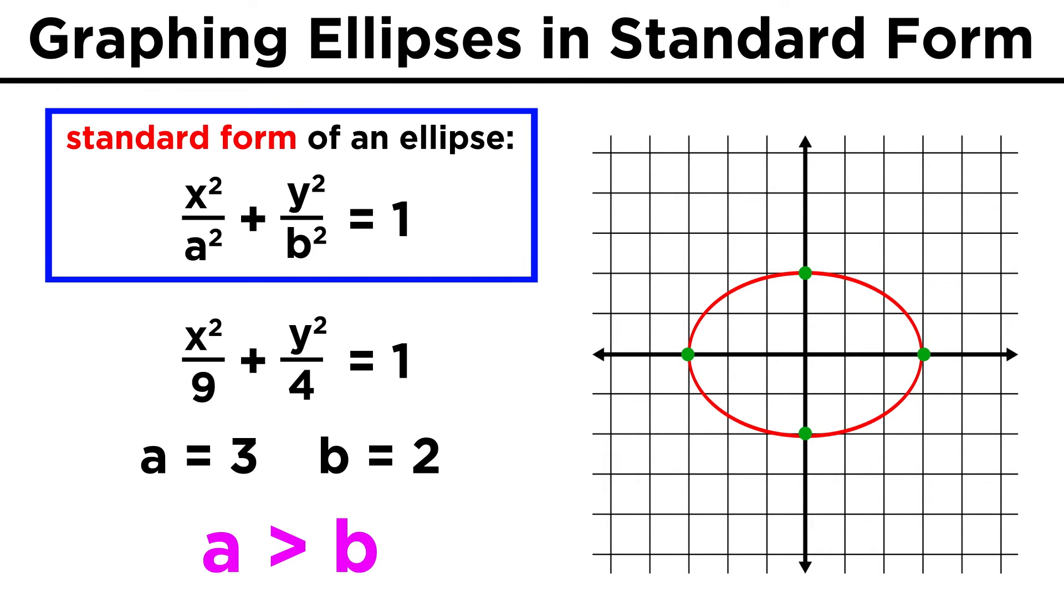We should note that A is always greater than B, so if the term below X squared is greater than the term below Y squared, we have A here and B here, which produces an ellipse that is wider than it is tall.